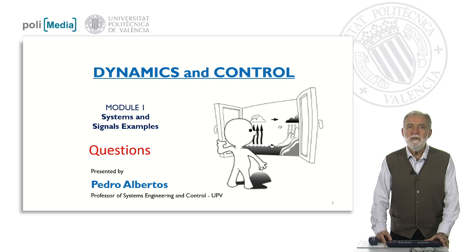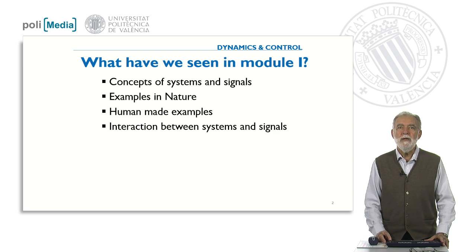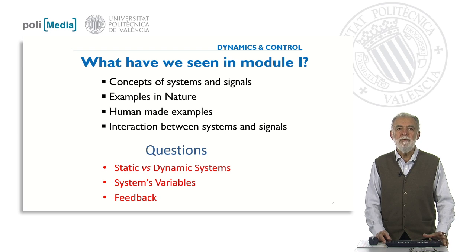These questions will refer to what we have seen in module one: concepts of systems and signals, examples in nature, human made examples, and the interaction between systems and signals. The questions are related to the difference between static and dynamic systems, what are the system's variables, and the concept of feedback.